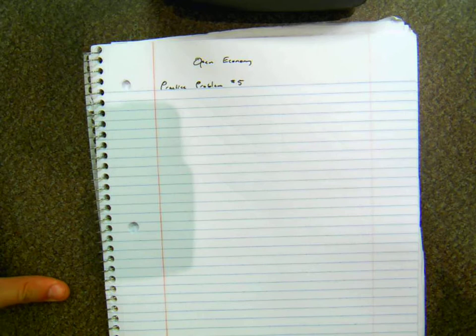Hello Econ 420. My name is Ryan and I'm one of your undergraduate learning assistants for the semester and today we're going to talk about practice problem five on the open economy problem set which says suppose that an economy is characterized by imperfect capital mobility and a flexible exchange rate. An increase in the foreign interest rate will cause the domestic exchange rate to x and the balance of payments to shift left by less or more than if the exchange rate were fixed.